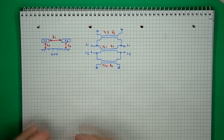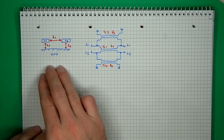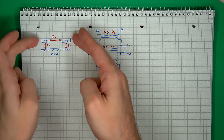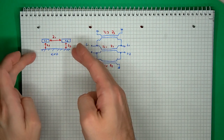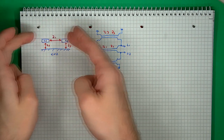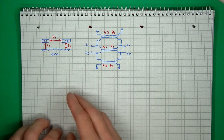So the first model we can create is one in which we define three couplings: one from each line to the ground, and one coupling directly between the lines.